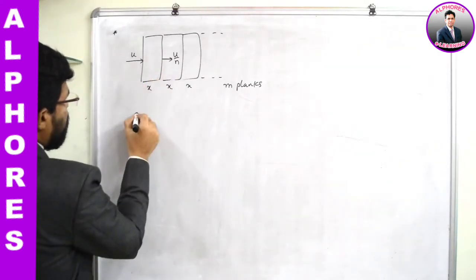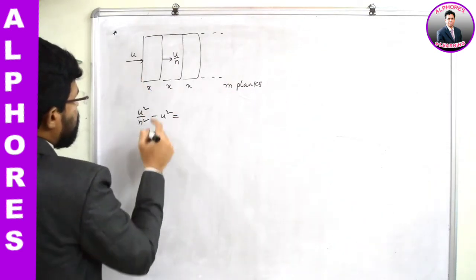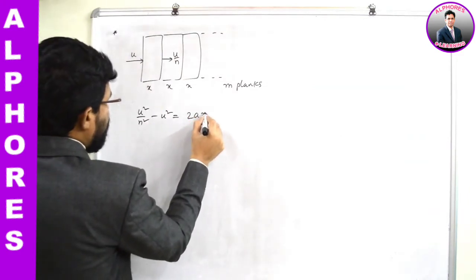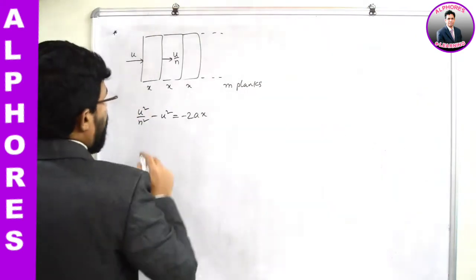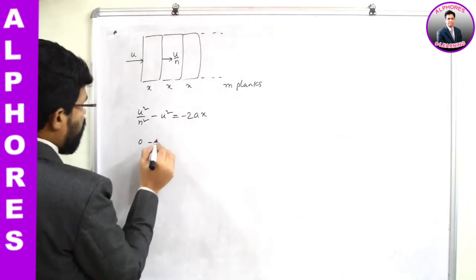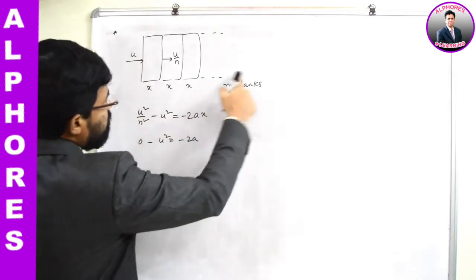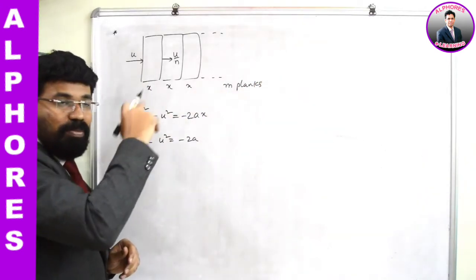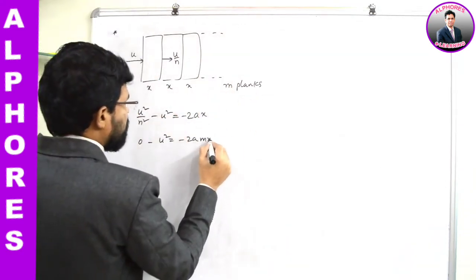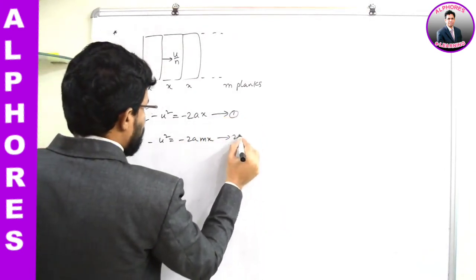The final velocity corresponding to the first plank is u/n. So: u²/n² - u² = -2ax. This is equation 1. And in the last (mth) plank, the bullet comes to rest — final velocity is 0. So: 0 - u² = -2a(mx). This is equation 2.